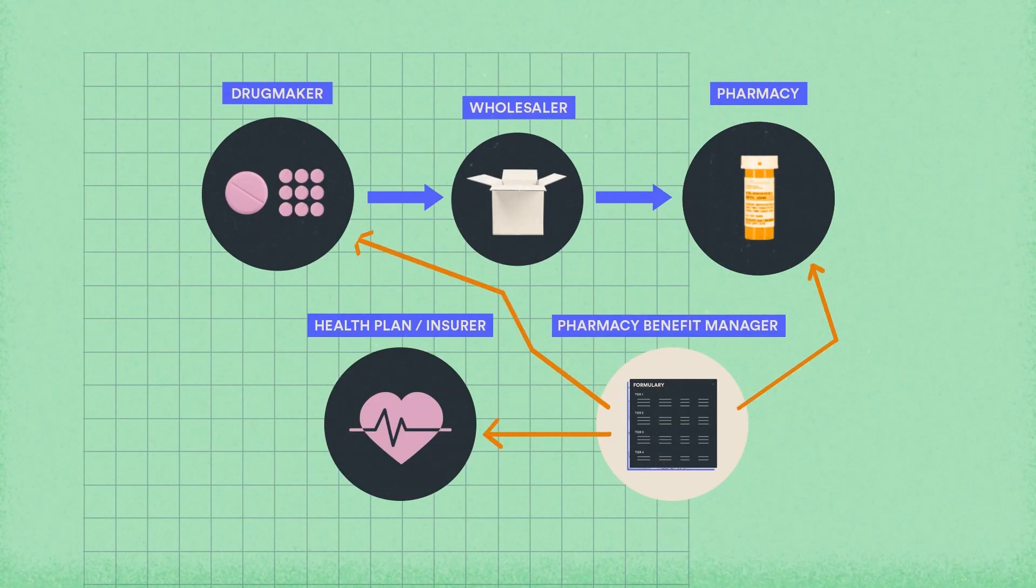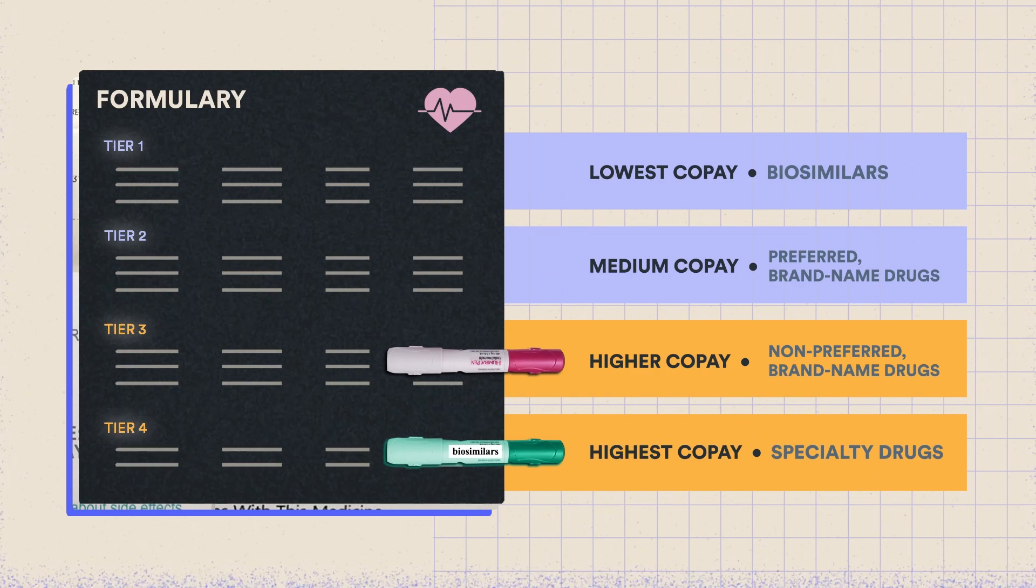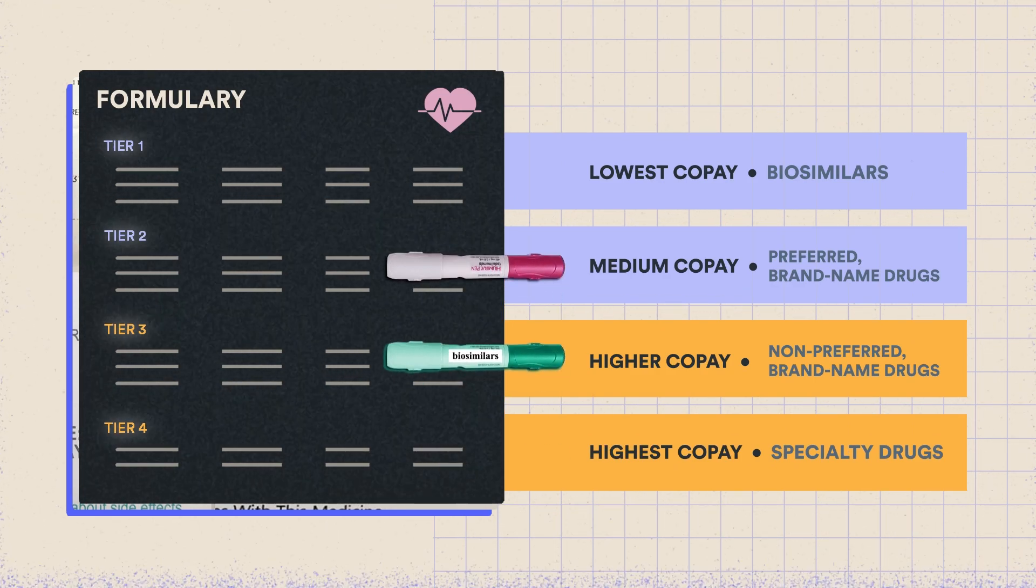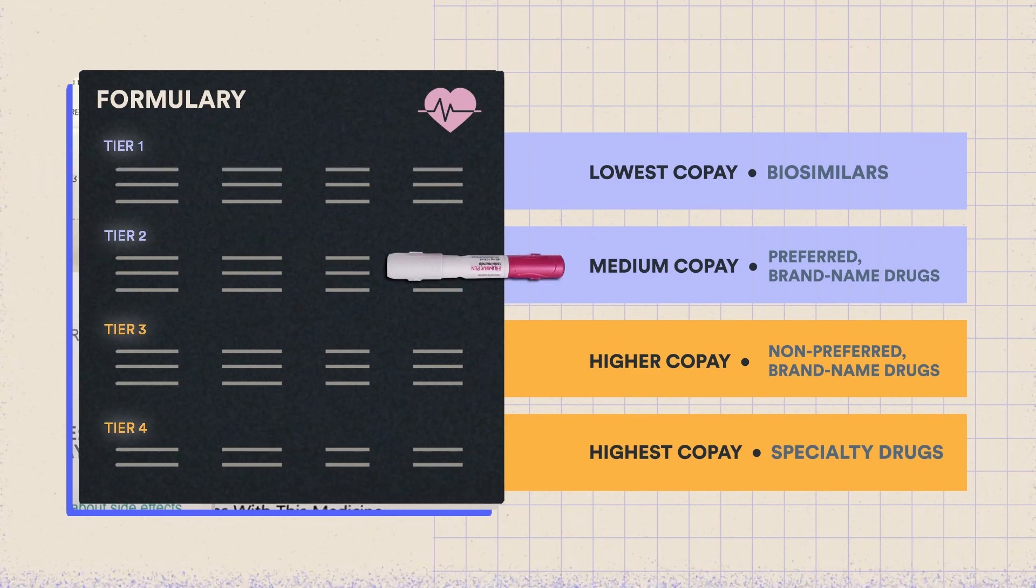Time to bring it back to pharmacy benefit managers or PBMs. A big factor for a patient's access to a Humira biosimilar is where the drug's placement is on the formulary of the patient's health plan, or even if it's listed at all.